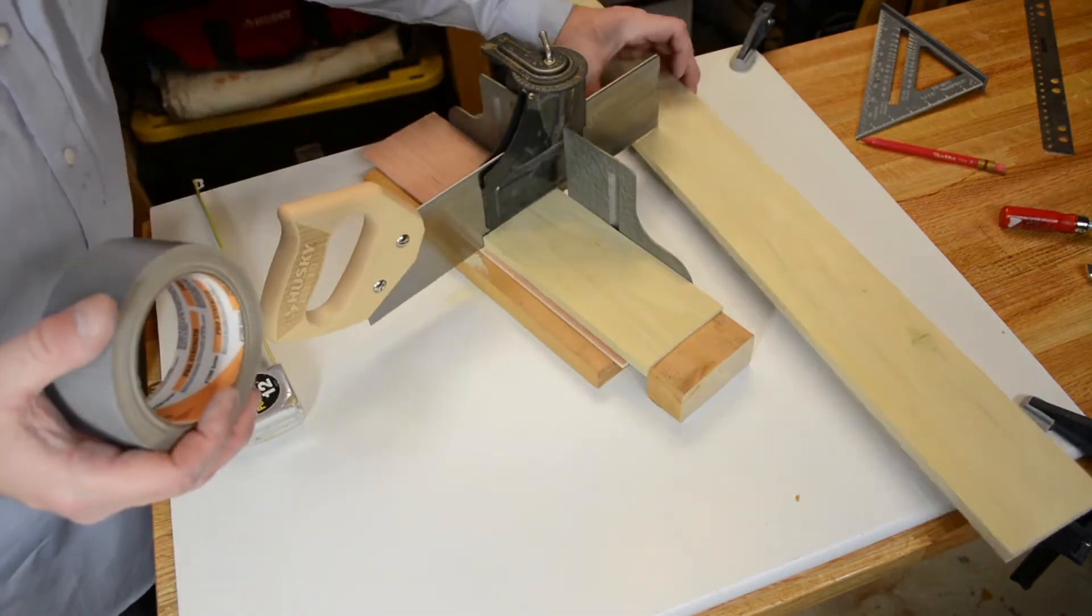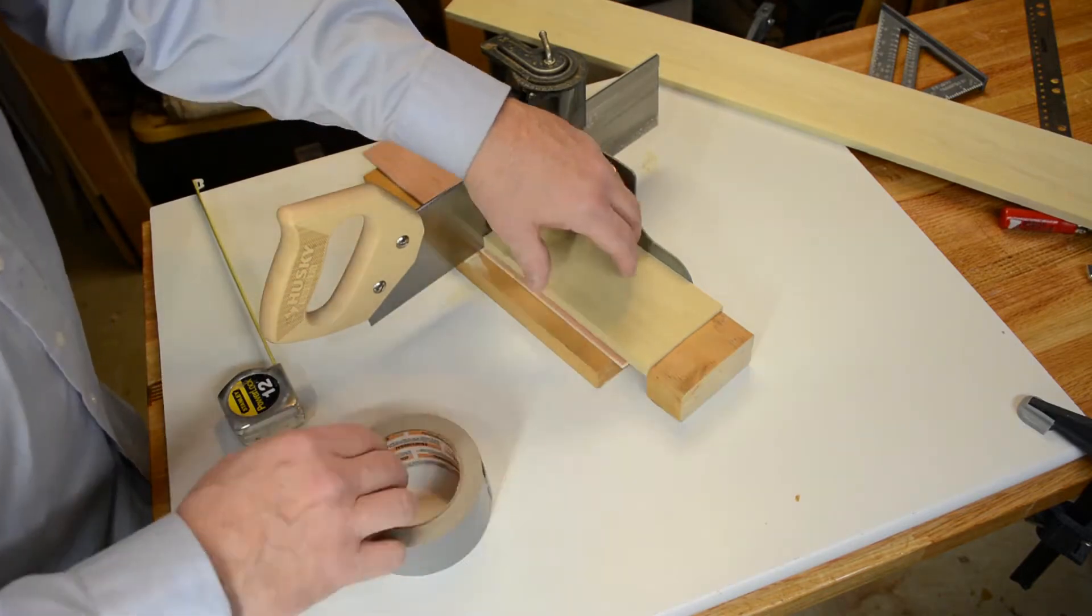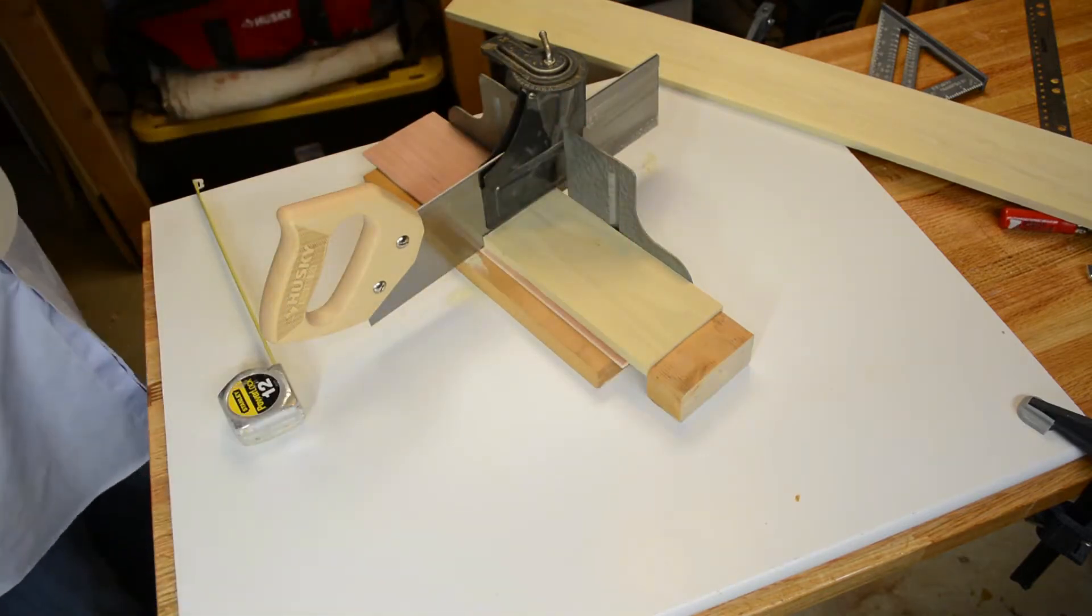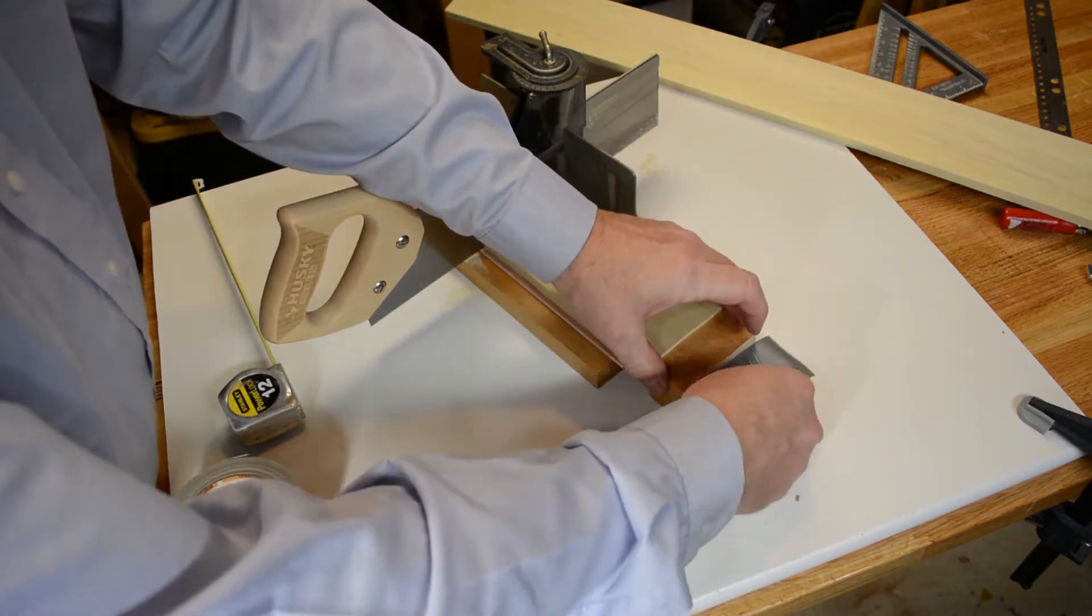We're going to set up something called a stop block. So I'm going to take my eight inch, my first piece of wood, I'm going to push it up against the saw blade, and then I've got another piece of scrap wood that I'm just going to tape down to my work area.